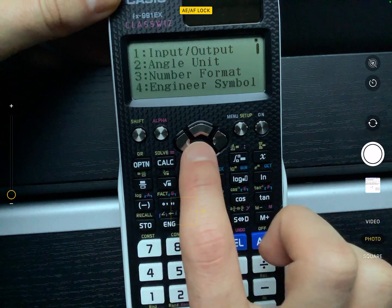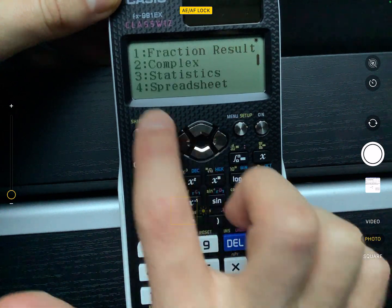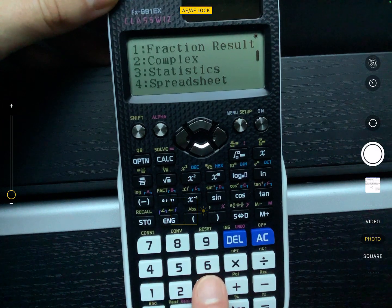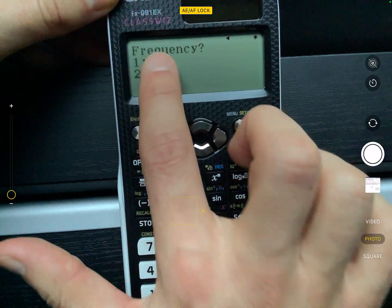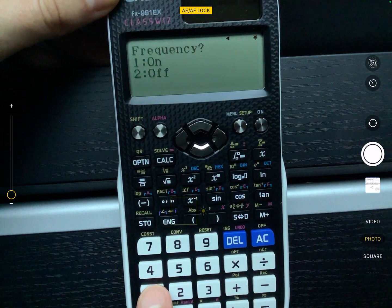So you're going to press shift and then menu to get the setup. So shift, setup, you're going to scroll down. When it says statistics, you can then press number three. And it says frequency on or off, you should just make sure it's always on.